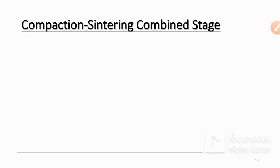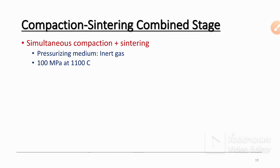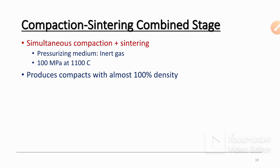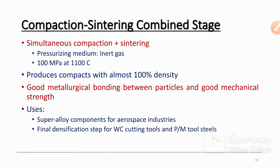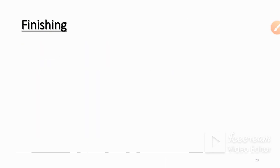In the combined compaction and sintering stage, simultaneous compaction plus sintering uses an inert gas pressurized medium at 100 MPa and 1100 degrees Celsius. This produces a compact with almost 100 percent density, good metallurgical bonding between particles, and good mechanical strength. Uses include superalloy components, aerospace industry applications, tungsten carbide cutting tools, and powder metallurgy tool steels.